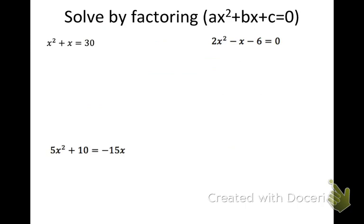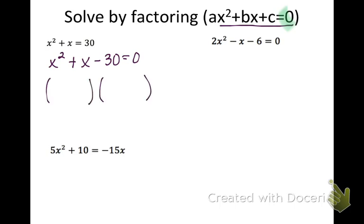We are going to start by factoring or solving quadratics that are in the form ax squared plus bx equals c. We'll go through different forms where maybe we are missing the bx or missing the c. The first thing you always need to make sure is that your equation equals zero. So for this first one, I'm going to start by moving the thirty over and subtracting it to the left side. Now it equals zero. When a is one, we can just put the two numbers that multiply to negative thirty and add to one into the parentheses. The two numbers that multiply to negative thirty and add to one are six and negative five.